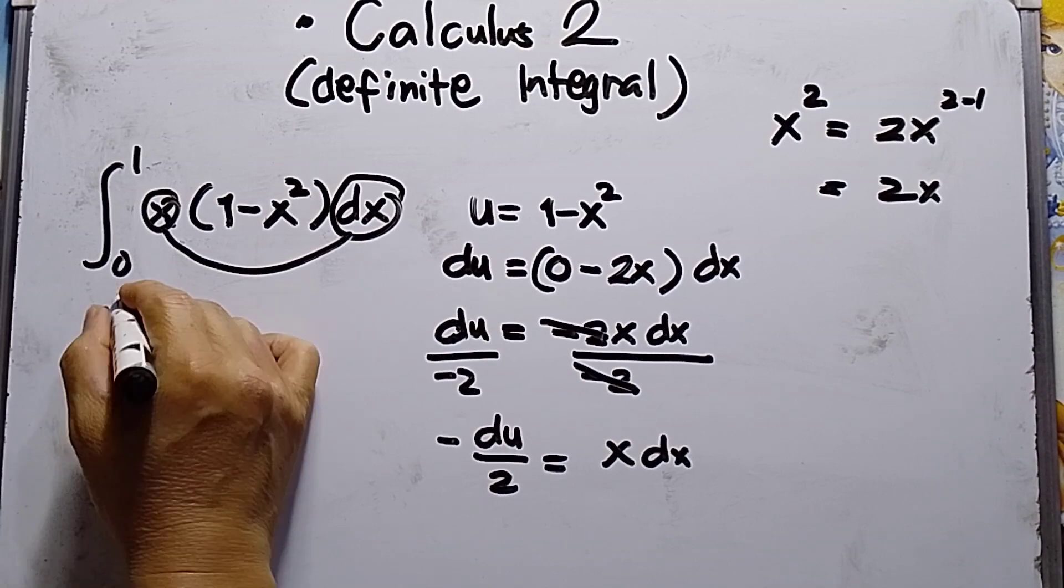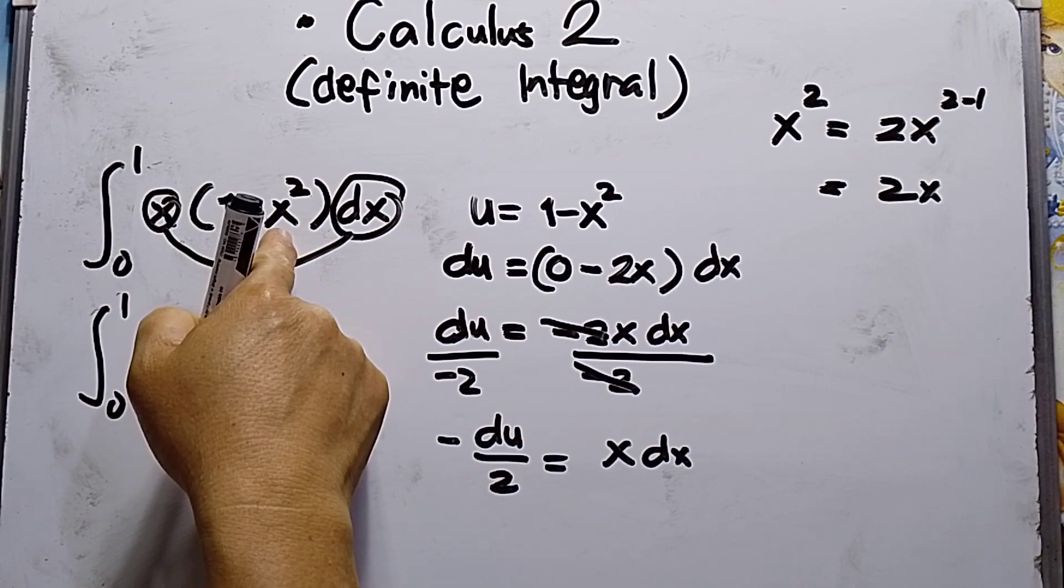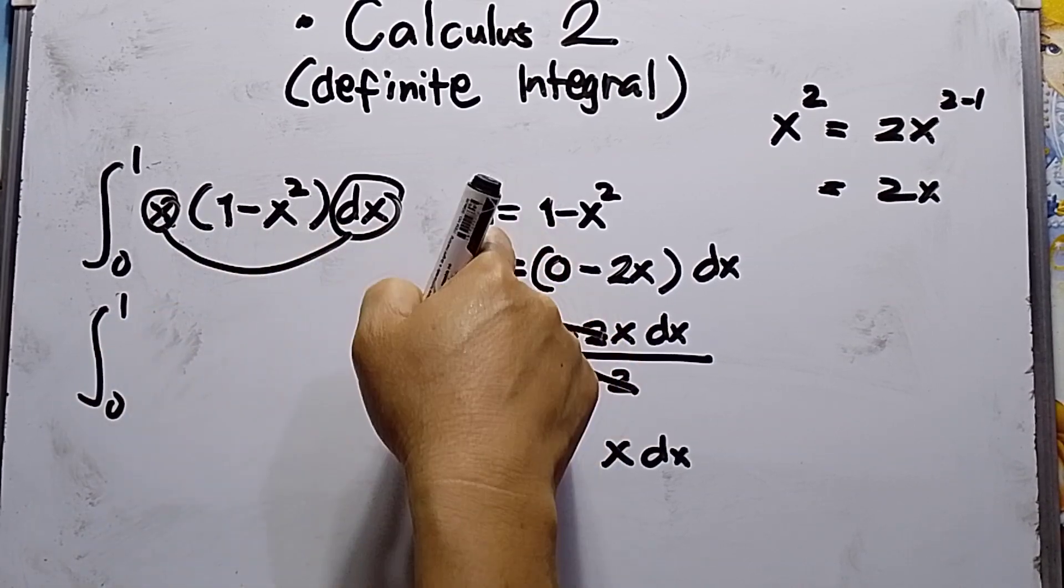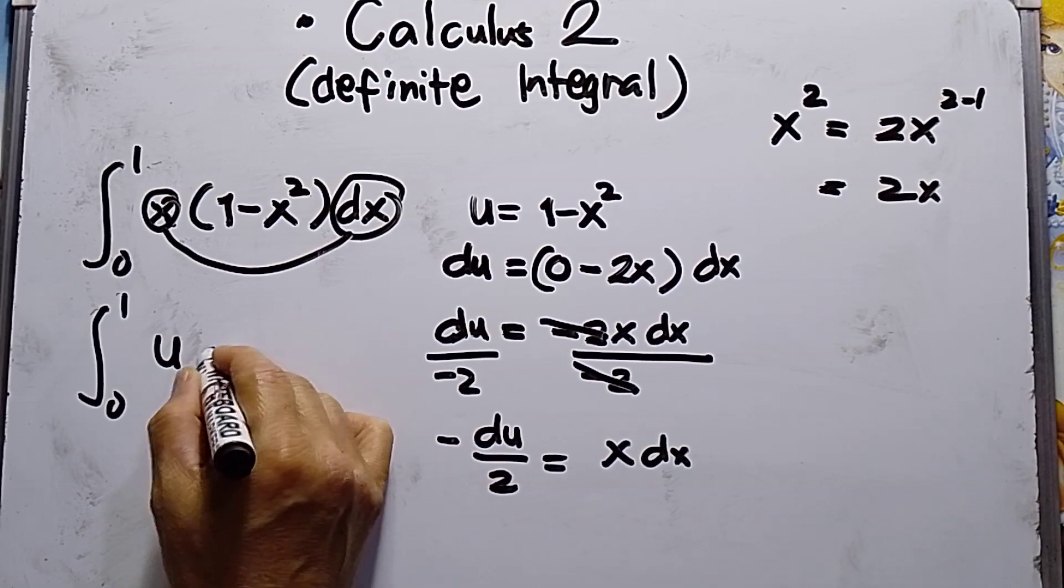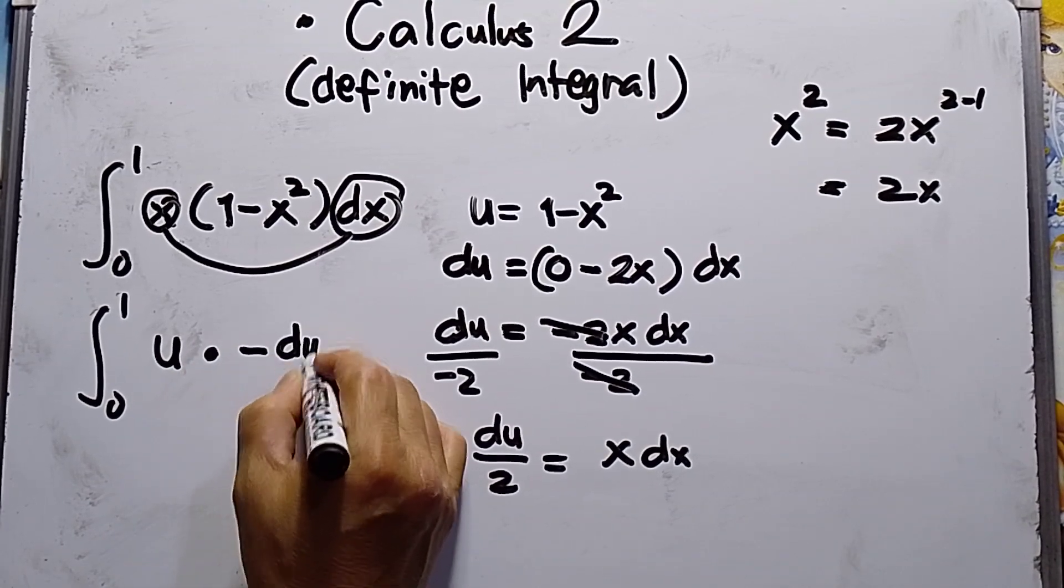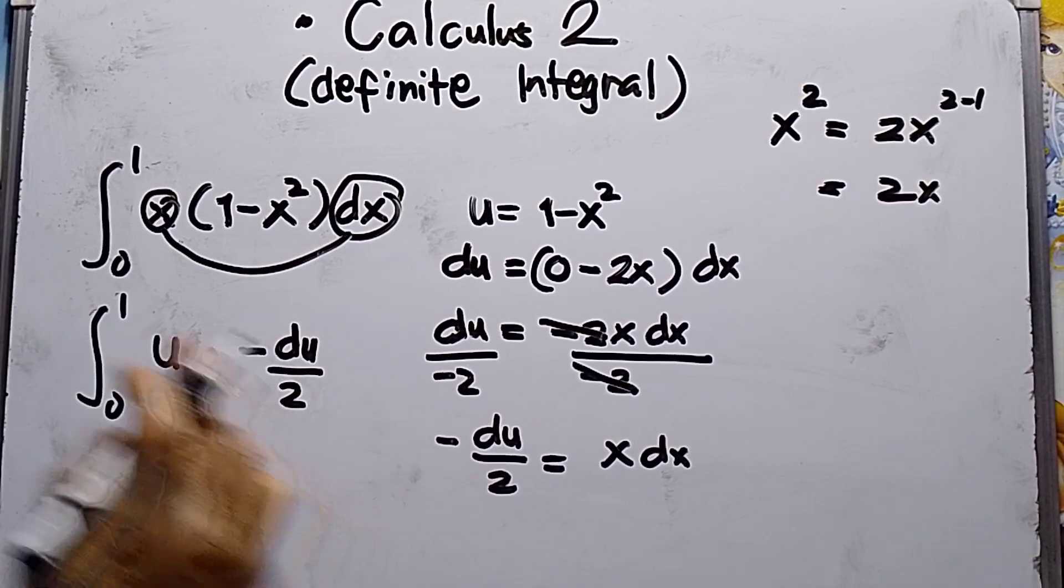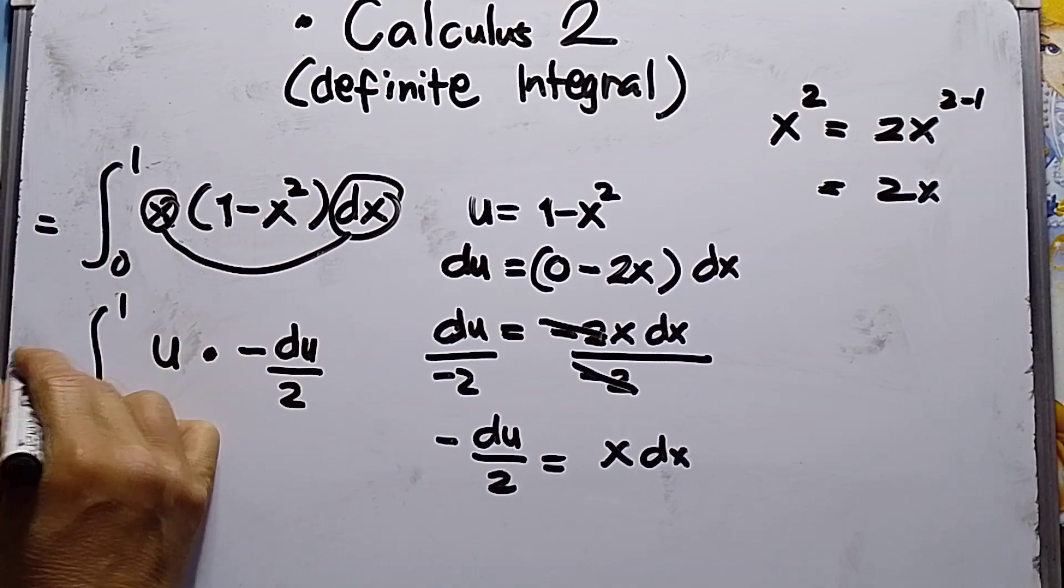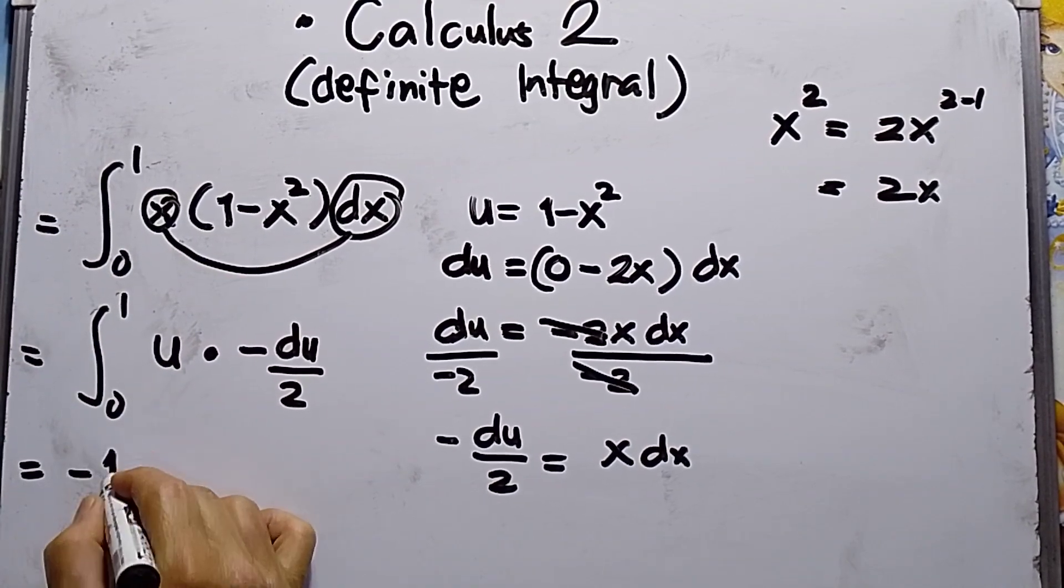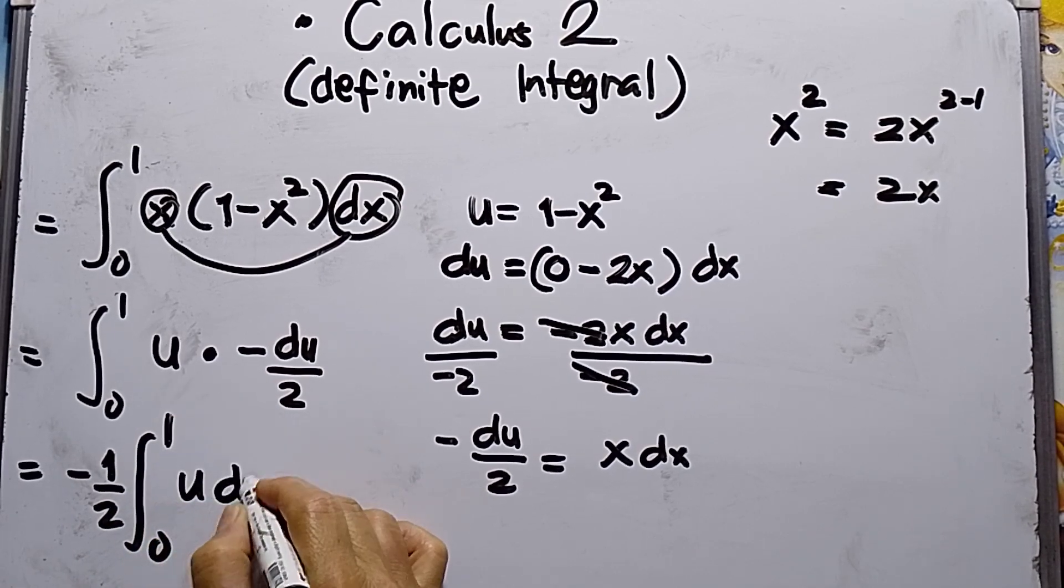So integral from 0 to 1, 1 minus x squared is u. And x dx is negative du over 2. Since this is constant, I need to remove it outside from the integration. This will be negative 1 over 2, integral from 0 to 1, u du.